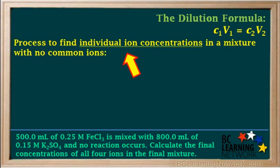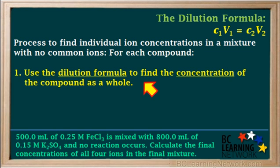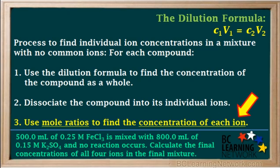Here we'll summarize a process that can be used to find individual ion concentrations in a mixture of solutions that do not have the same ion in common. For each compound added to the mixture, we first use the dilution formula to find the final concentration of the solution as a whole. Next, we write a dissociation equation showing the compound breaking up into its individual ions, making sure we balance it with the correct coefficients. Lastly, we use the mole ratio shown by the coefficients in the dissociation equation to find the final concentration of each individual ion. We repeat these three steps for each solution added to the mixture.